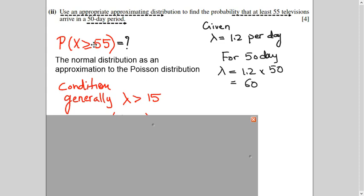You see x is greater than or equal to 55, and there is no end limit in Poisson. So you cannot calculate easily. Whenever you have to calculate 'greater than,' you always do 1 minus the reverse. So if I take x less than 55, that means 54, 53, 52, 51, and back to 0 — that's too much work. That's why approximation is used here, and we will verify the condition is met.